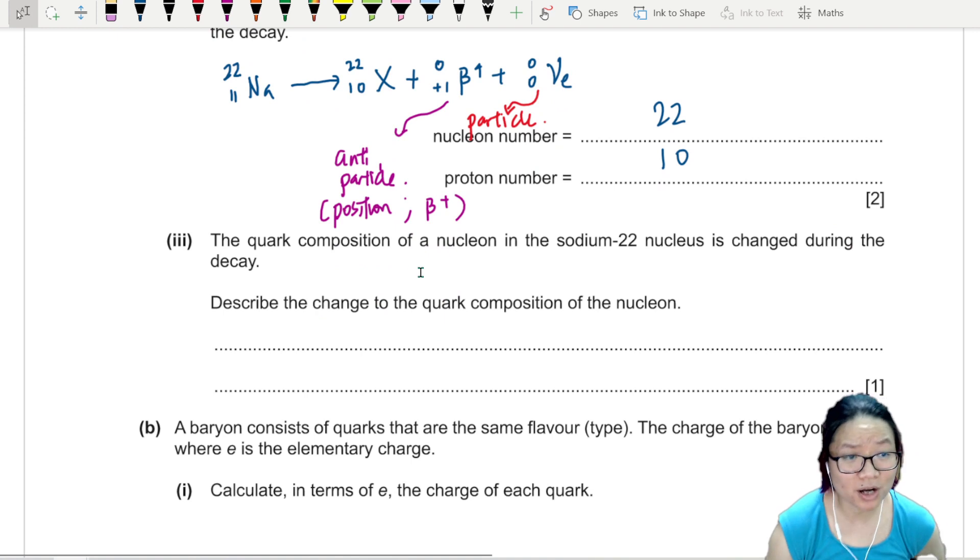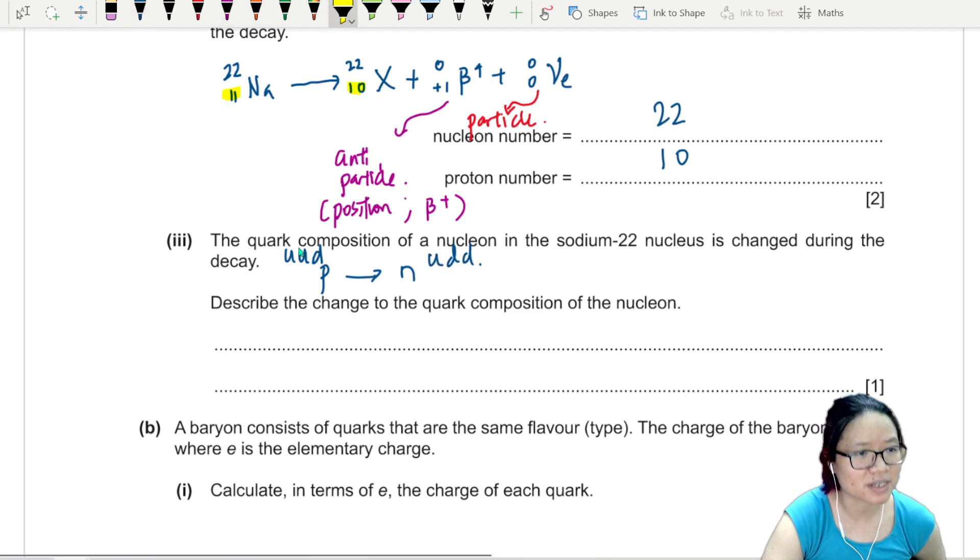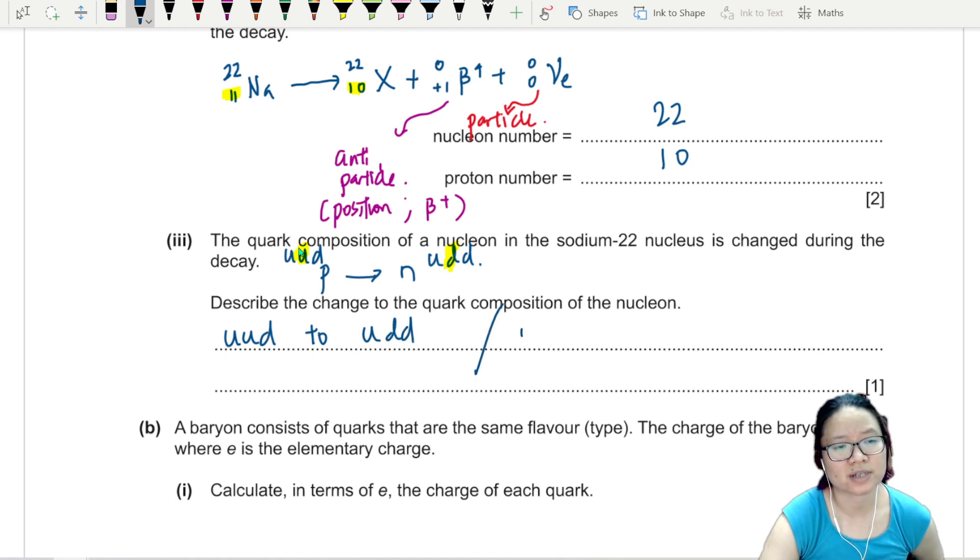Part 3. The quark composition of the nucleon is changed during the decay. Of course. Describe the change to the quark composition. You look here - proton number went from 11 to 10. So we went from one proton to one neutron. Proton is up, up, down.